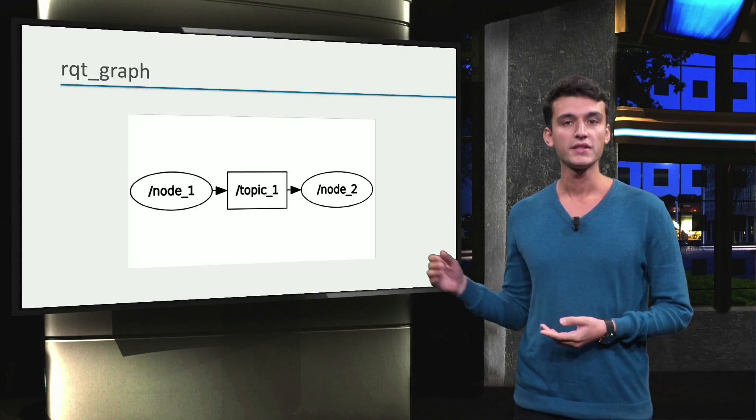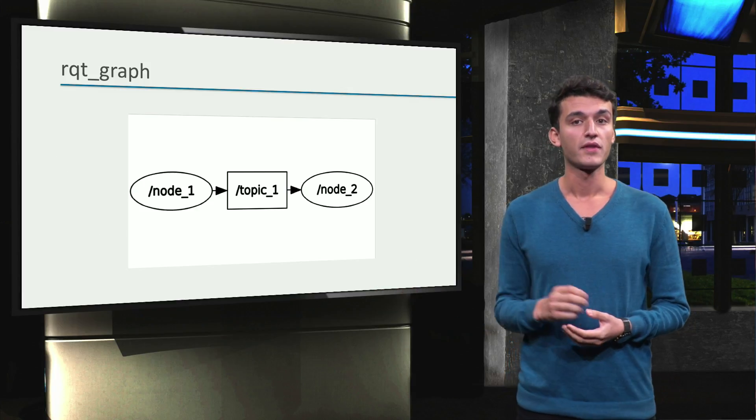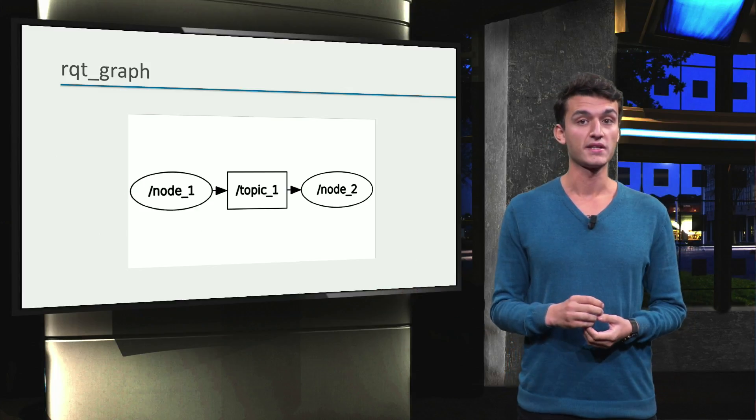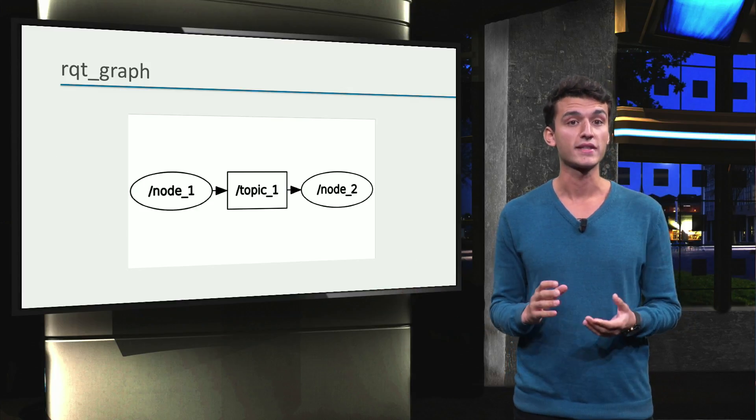Right here we see a simple graph. The nodes are represented as ellipses and the topics as rectangles.